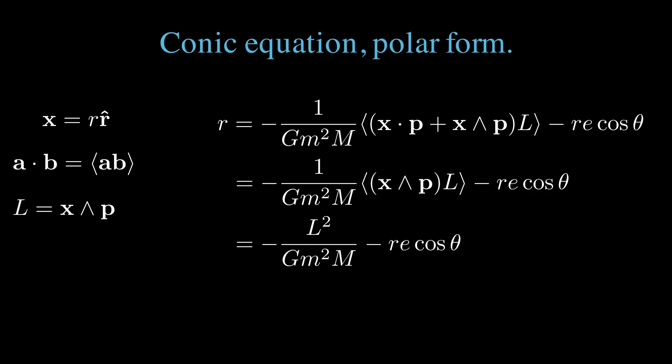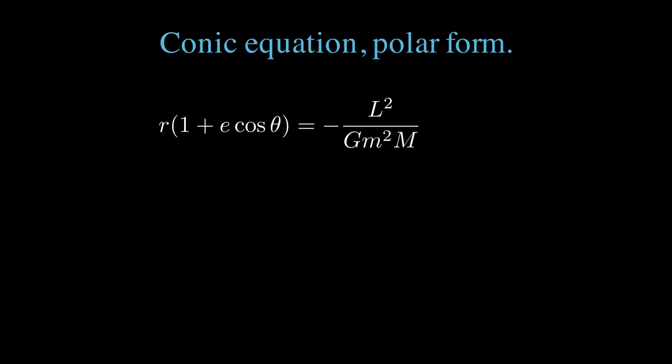Grouping our r terms, we almost have the standard conic form. r all times 1 plus e cos theta equals the scalar. That scalar we'll write as e times d, where d is the directrix and e is the eccentricity. We used a negative vector e earlier so that we have e greater than zero in this final result. e between 0 and 1 is an ellipse, equals 1 is a parabola, and e greater than 1 is a hyperbola.